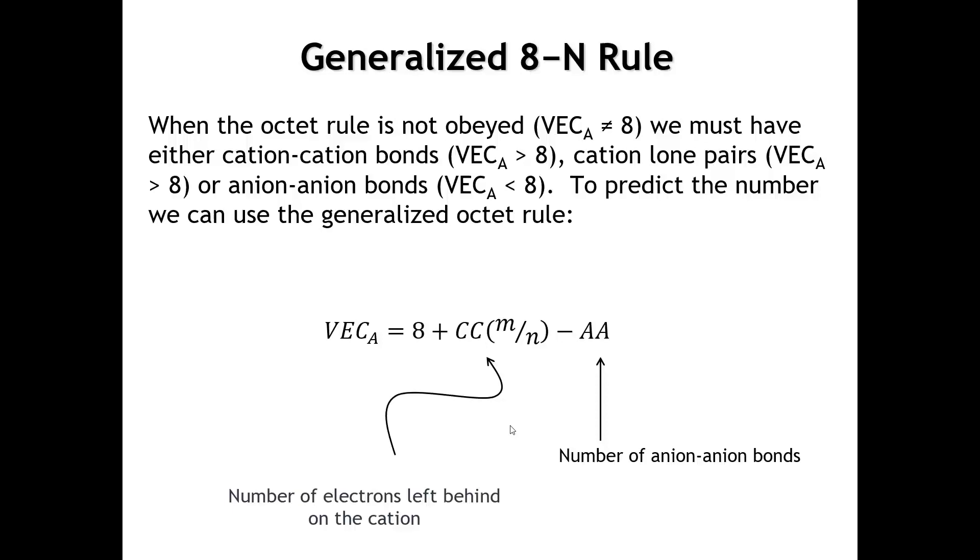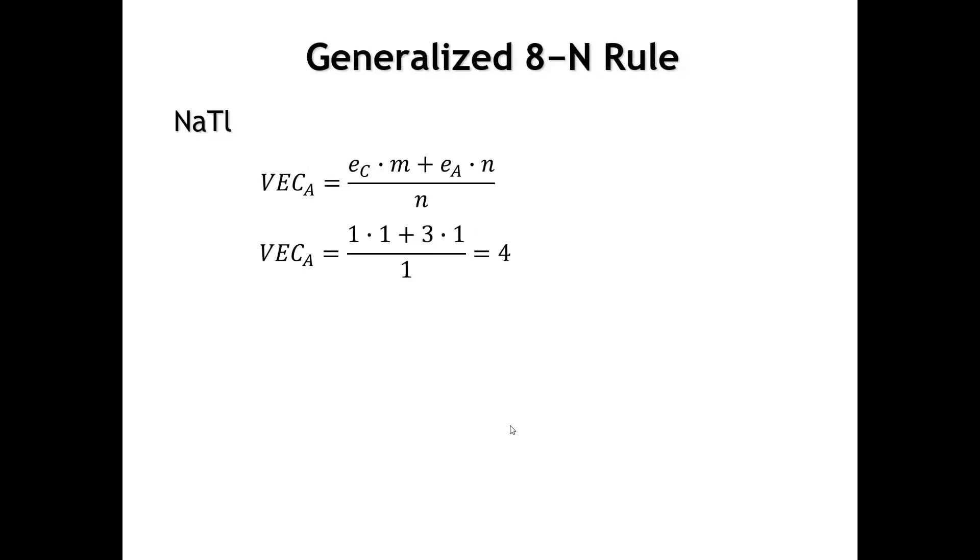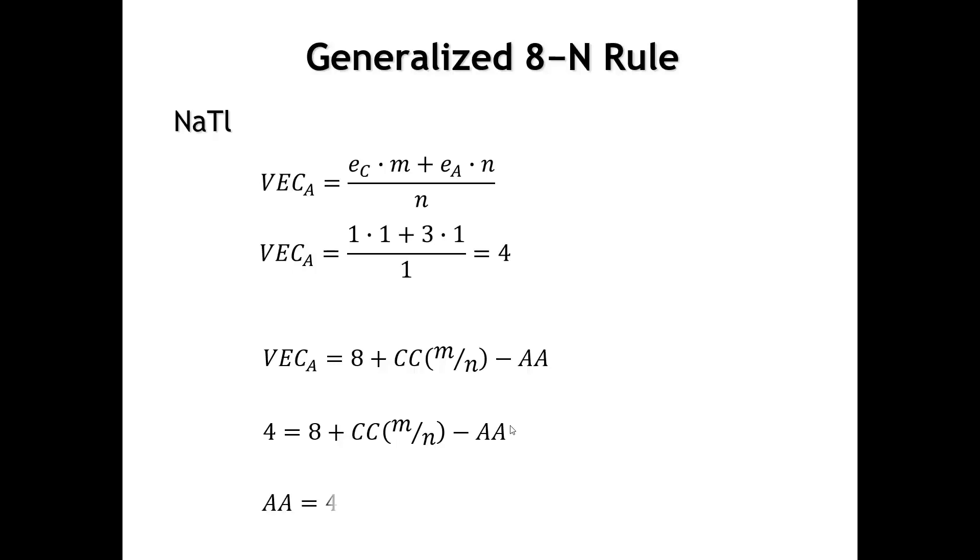And so, if there's electrons left behind on the cations, either we're going to get cation-cation bonds, or we might have non-bonding electron pairs on the cation. Okay, let's apply this rule to our sodium-thallium compound. We've already calculated that the valence electron count per thallium is four. Now, if we use this generalized eight minus N rule, what can we learn? Well, let's plug the four in for the VEC sub A. And then, if we look at the right-hand side of this equation, we can see that, you know, because eight is larger than four, we need AA, that's the number of anion-anion bonds, to be non-zero. It's not going to help us at all to have cation-cation bonds, or cation-lone pairs. So, the middle term there drops out, and then we can determine that the number of anion-anion bonds must be four.